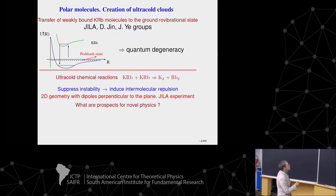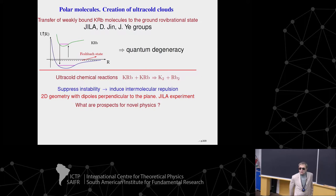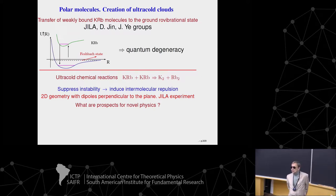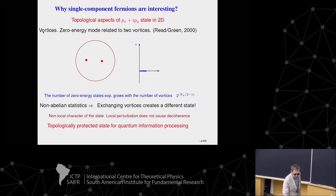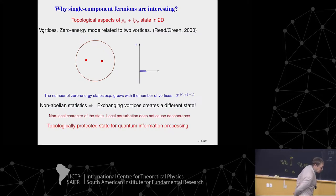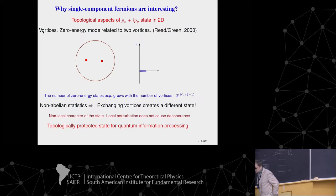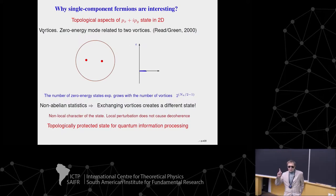As I already explained, people observed ultra-cold chemical reactions between polar molecules, and all the time we were thinking how to avoid these reactions. One approach is to induce intermolecular repulsion — for example, two-dimensional geometry with dipoles perpendicular to the plane. There are other inventions to suppress completely or at least partially these ultra-cold chemical reactions and get nice many-body physics.